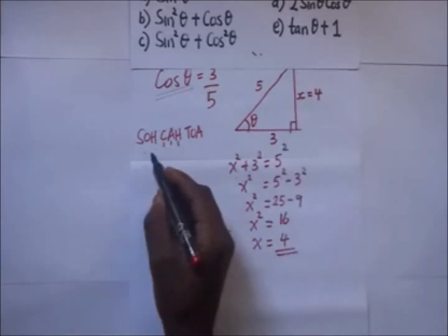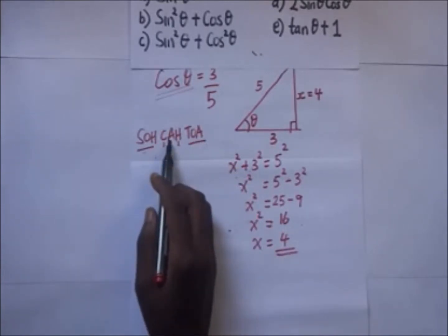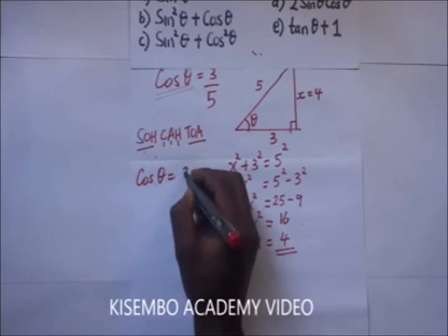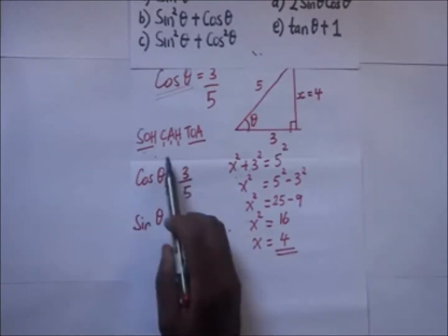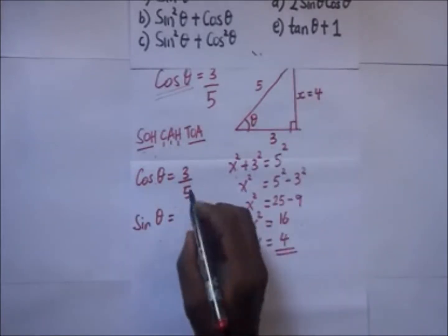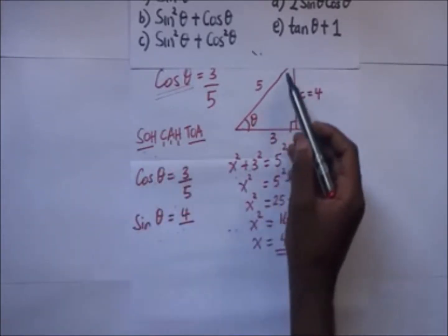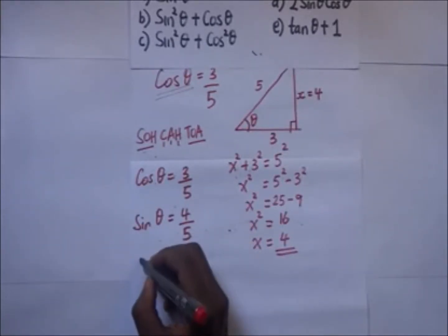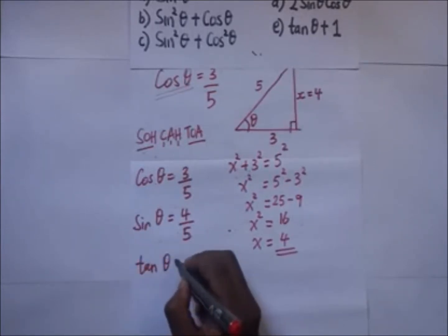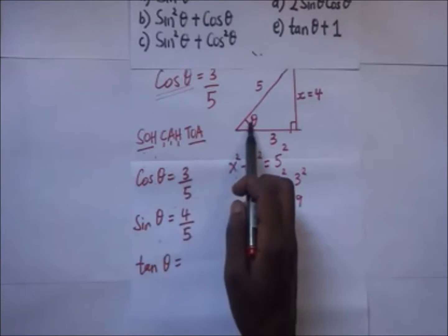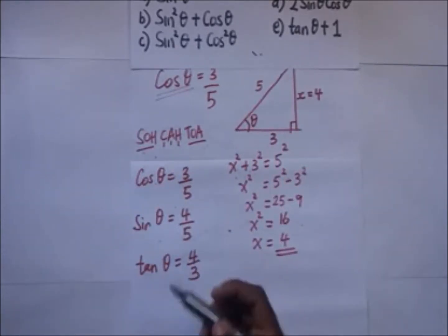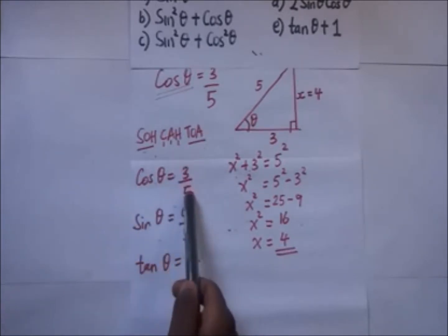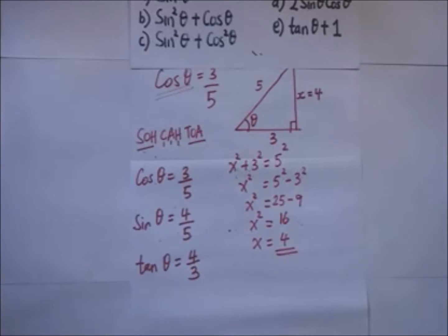After getting x equal to four, we can complete the ratios. Cosine of theta is already three over five. Sine of theta is opposite over hypotenuse, which is four over five. Tangent of theta is opposite over adjacent, which is four over three. So we now have cosine, sine, and tangent of that angle.